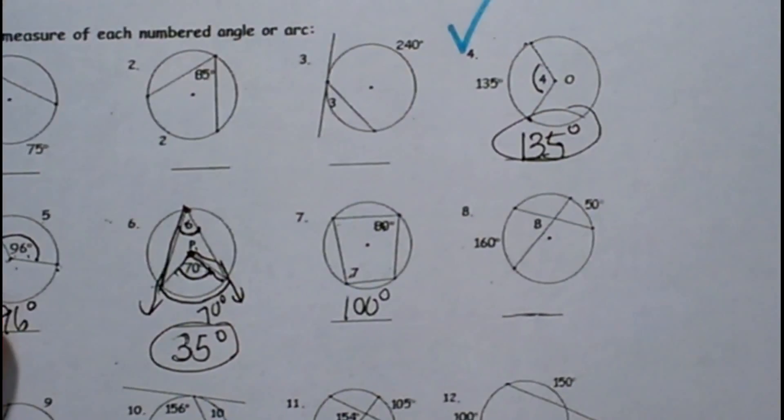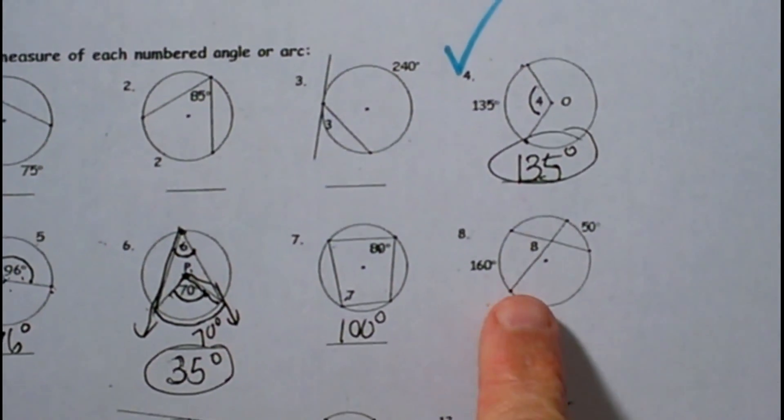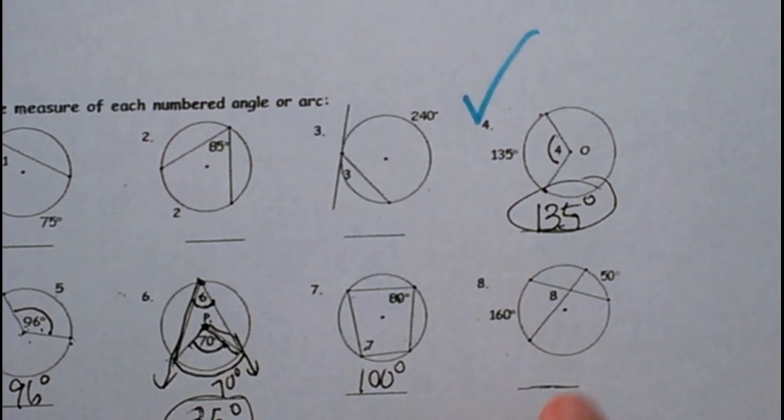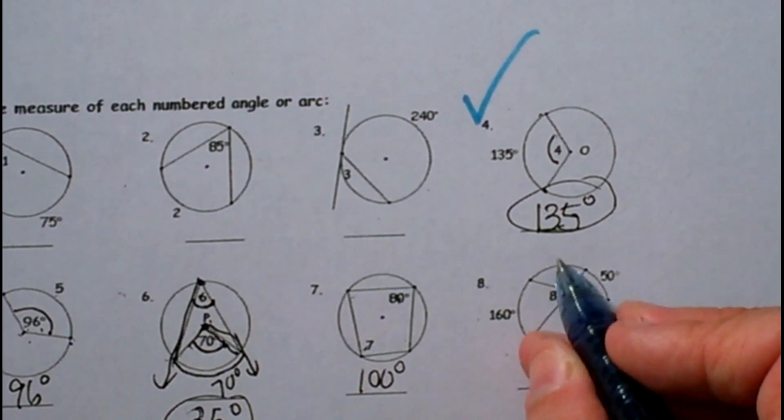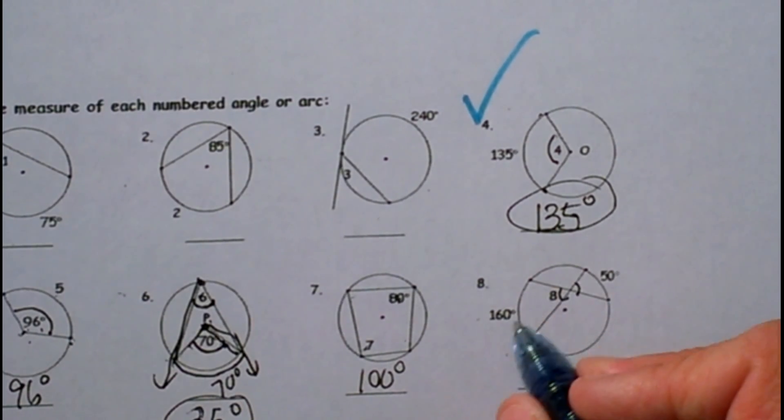Let's look at number 8. We have one of these angles that's in the circle but it's not at the center and it's not inscribed, so we have to do what? We have to look at the intercepted arcs and add them and divide by 2.